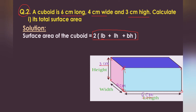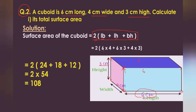Length is 6 cm, breadth is 4 cm, height is 3 cm. So: length times breadth is 6 × 4 = 24, length times height is 6 × 3 = 18, breadth times height is 4 × 3 = 12. Adding them: 24 + 18 + 12 = 54, and 54 times 2 is 108.